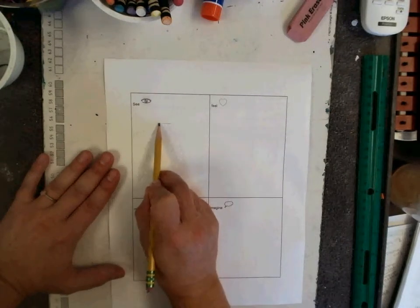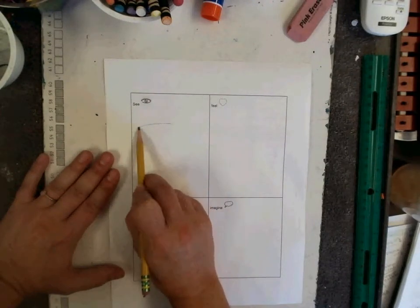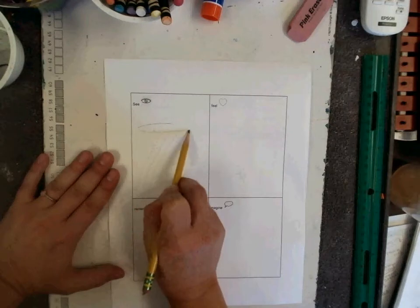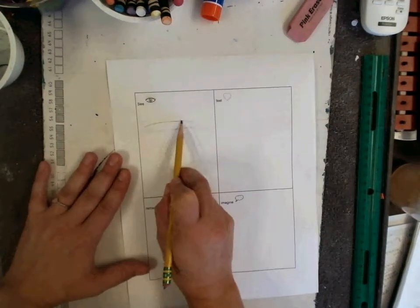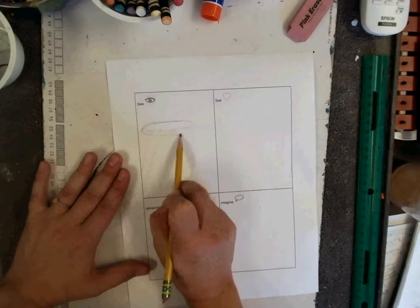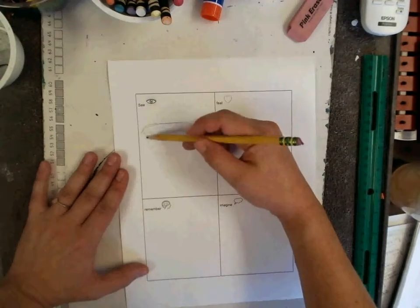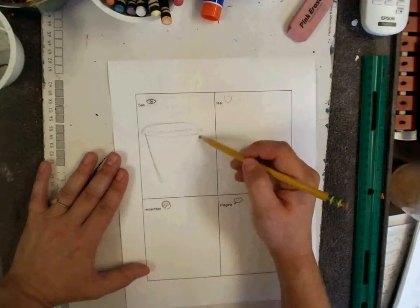When I use my pencil, I sketch lightly. That means I kind of hold it at an angle, so I'm using this side. I draw really lightly in case I make a mistake.